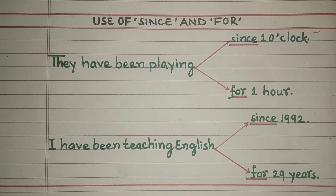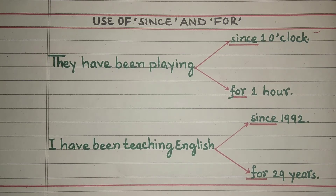9 baje se, 10 baje se, 11 baje se, 12 baje se khel rahe hain — toh aapko 'since' ka istemal karna hoga. They have been playing since 1 AM, since 1 PM, since 2 AM, since 2 PM. Dear students, if you use a clock time, you will use 'since'.